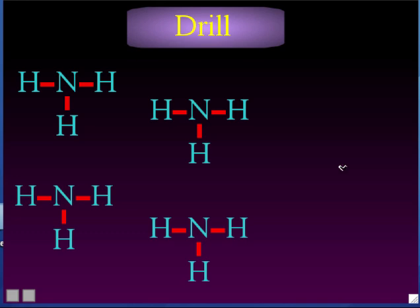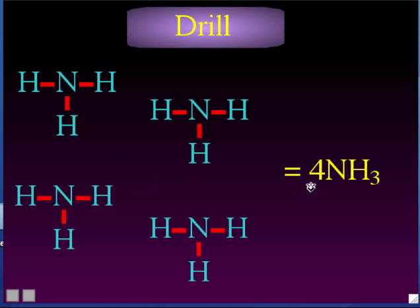Here's a drill — how would we symbolize four ammonia molecules? You have 4NH₃. Just write the molecular formula of one molecule, NH₃, and then put a big digit in front of it to say how many of that molecule you're talking about. So this is represented as 4NH₃ — four molecules of ammonia.